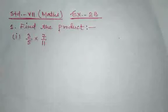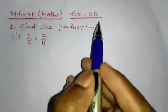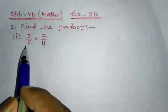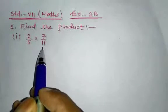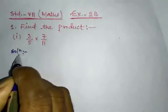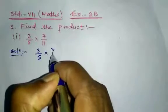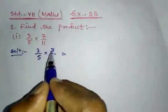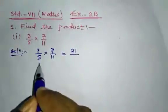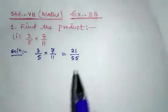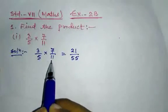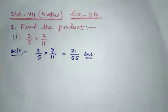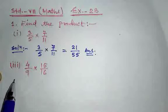Good morning friends. Exercise question number one: find the product of 3/5 and 7/11. Solution: 3/5 into 7/11. Multiply 3 and 7 — 3 sevens are 21 — and 5 and 11 — 5 elevens are 55. So the answer is 21/55.